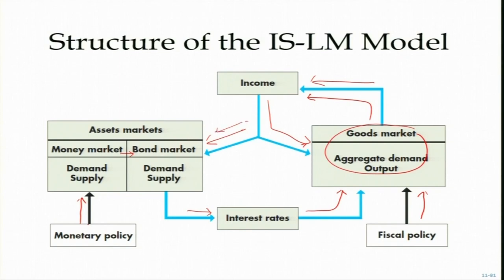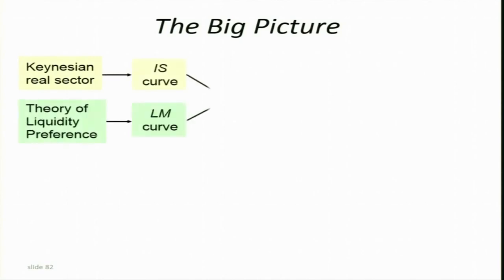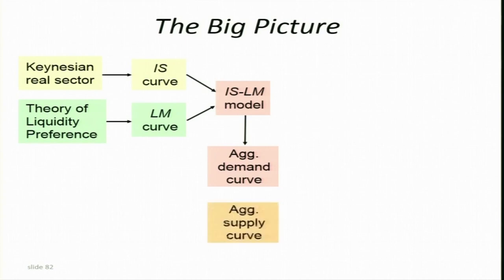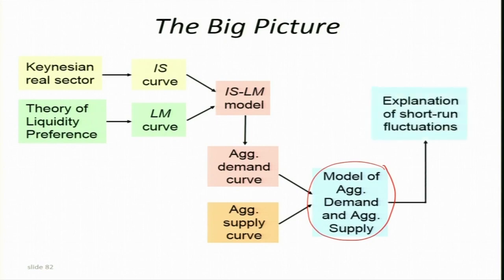Similarly, fiscal policy directly impacts the goods market, then increases income in the economy. Because of the increase in income, it has an impact on the money market and bond market. The change in interest rate arising from fiscal policy works in this way: increase in income raises transaction demand for money, and assuming money supply is constant, the rate of interest increases, which further impacts output. The IS-LM model is used to understand short-run fluctuations in the macroeconomy.